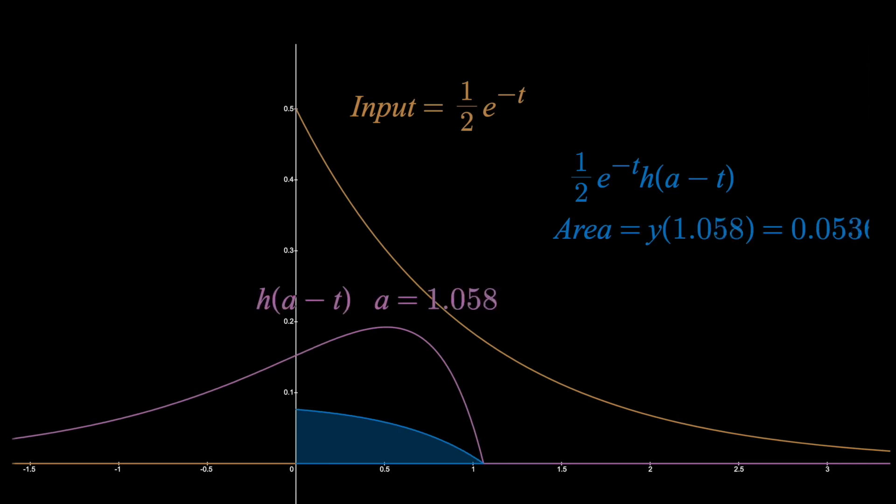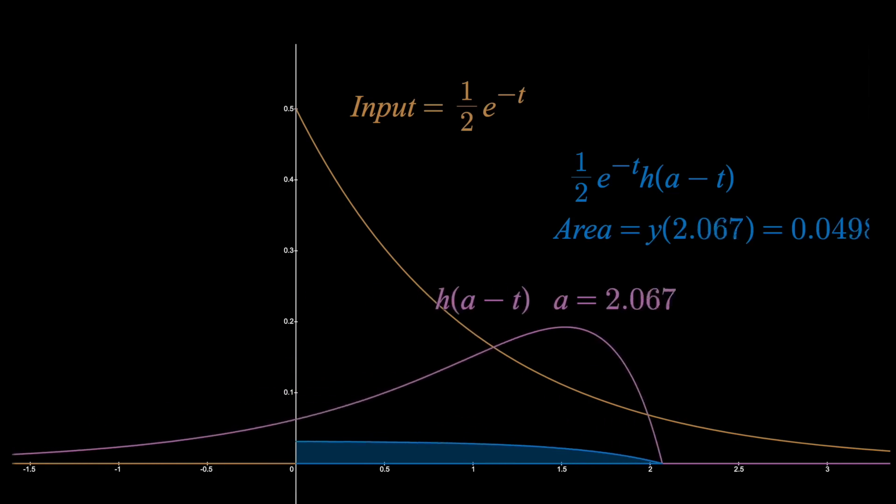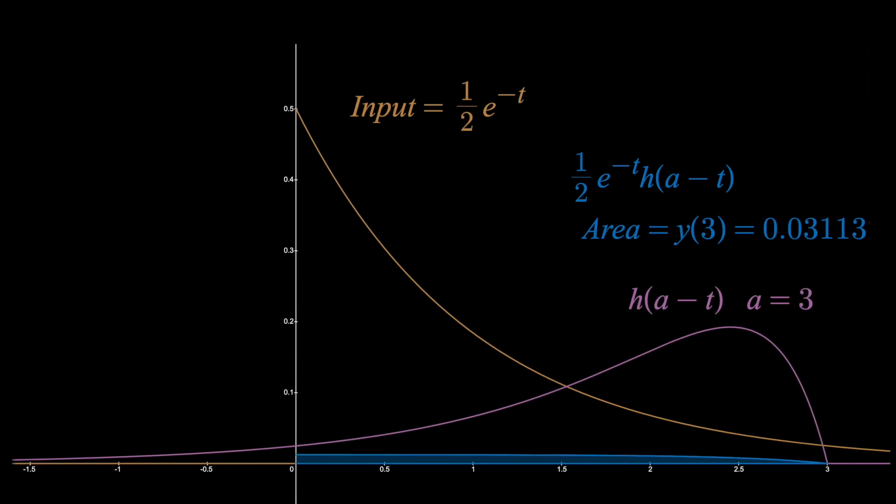At time equals three seconds, the area and thus position will be x equals 0.031 meters. So if we actually plot that area as a function, it would look like this.